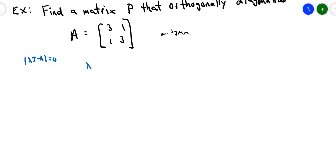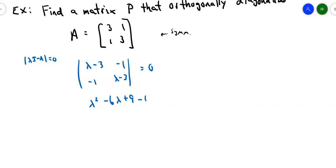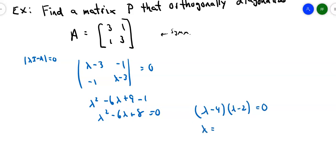So I end up with (λ−3) along the diagonal and −1 off-diagonal. Taking that determinant and setting it equal to 0 gives me λ² − 6λ + 9 − 1, which simplifies to λ² − 6λ + 8 = 0. Factoring gives (λ−4)(λ−2), so I end up with two eigenvalues: λ = 4 and λ = 2.